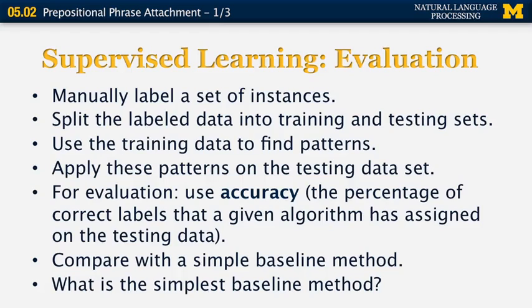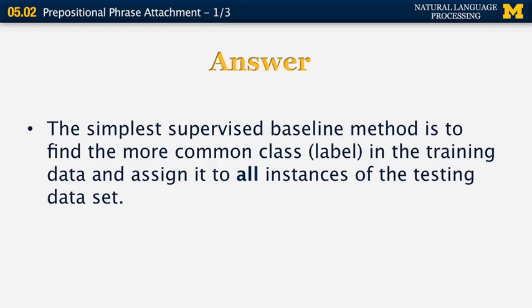It is very important when you come up with a new algorithm for a binary classification problem to compare it using a reasonable metric like accuracy against a simple baseline method. The simplest supervised baseline method is to find the most common class in the training data — assuming one is more frequent, which is almost always the case — and assign that label to all instances in the testing dataset. We are going to look at different algorithms and compare them with this baseline.